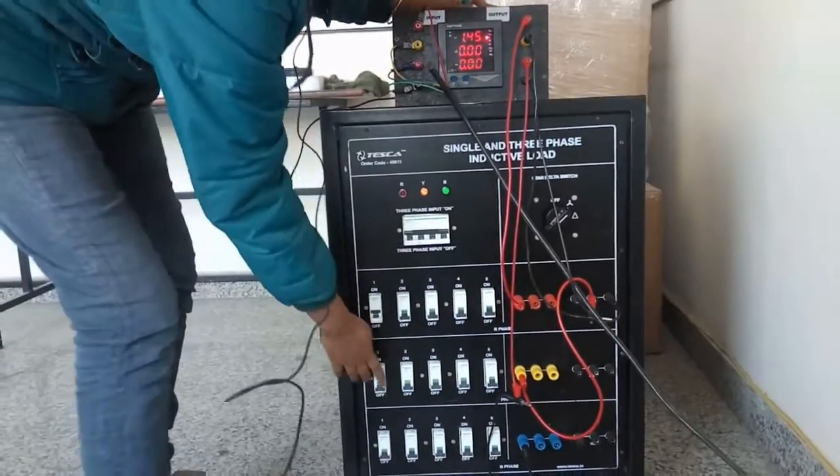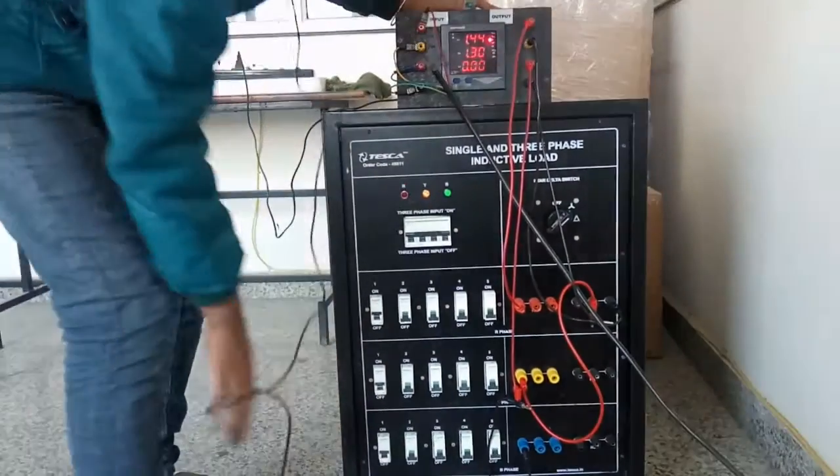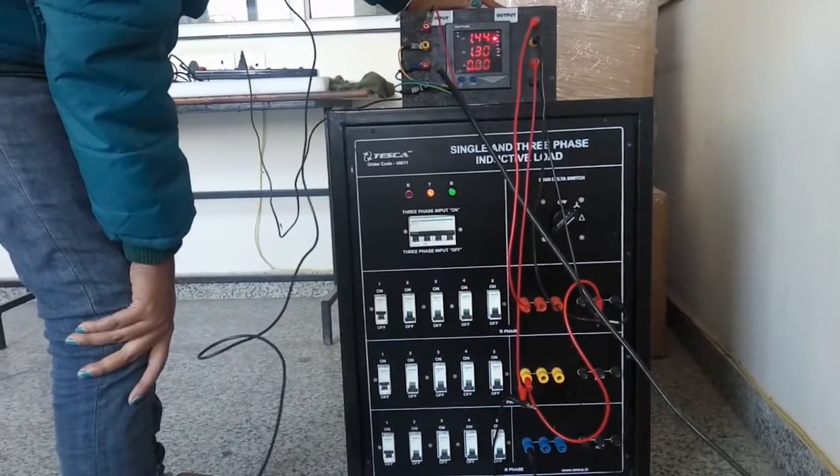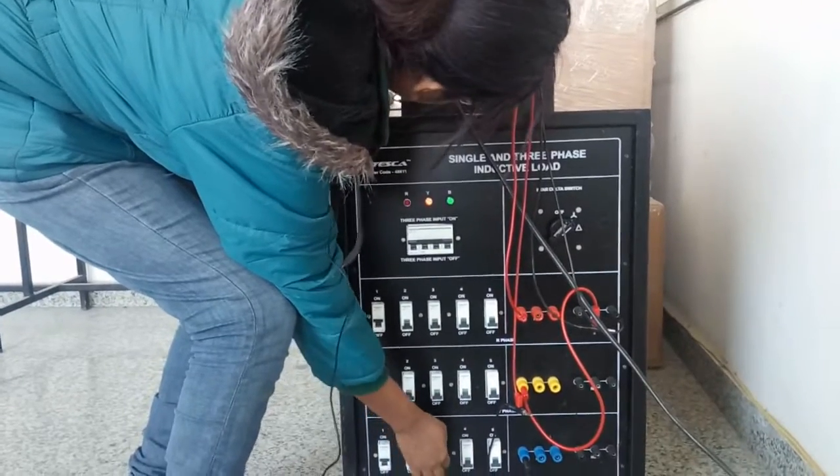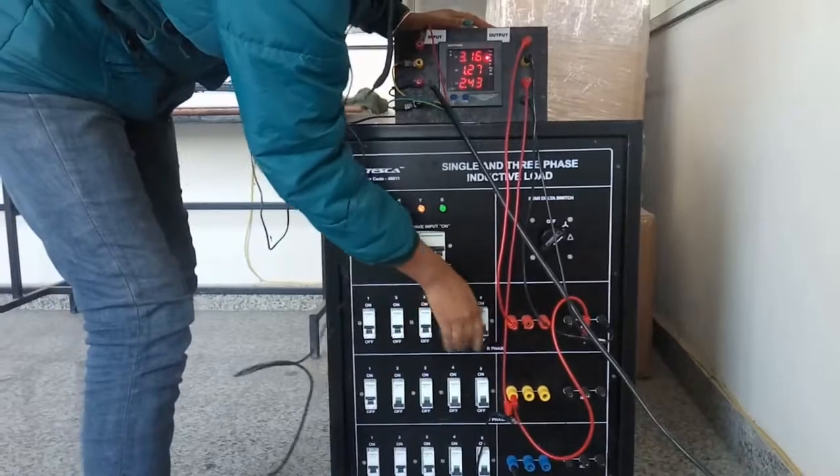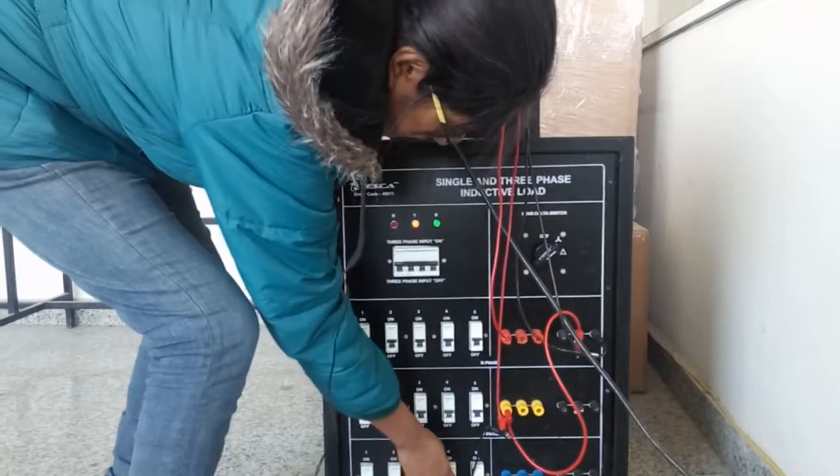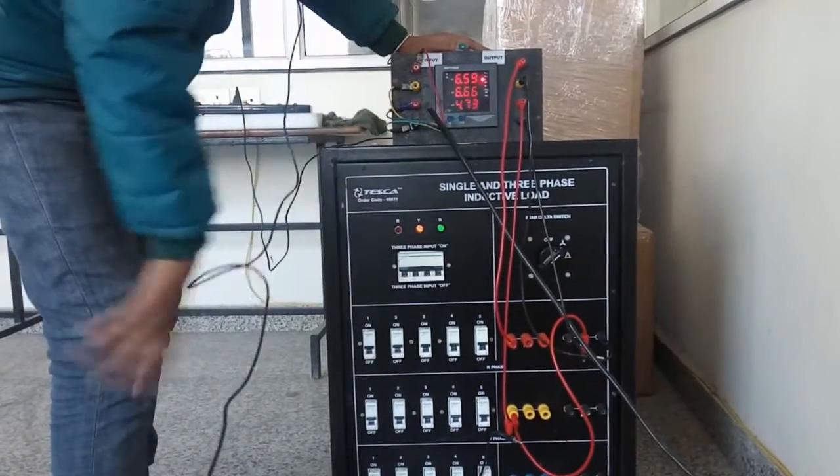This is for R phase, this is for Y phase, and this is for B phase. Increase the load like this, and this is the current per phase.